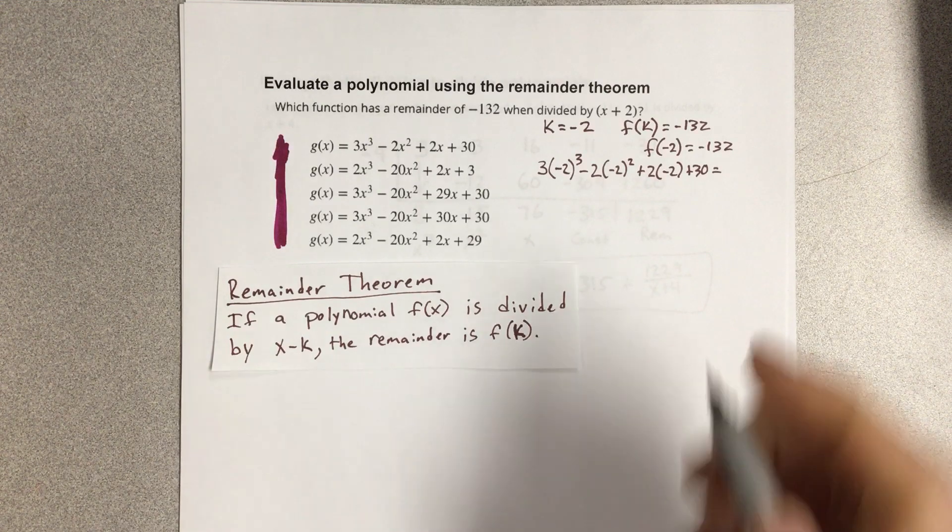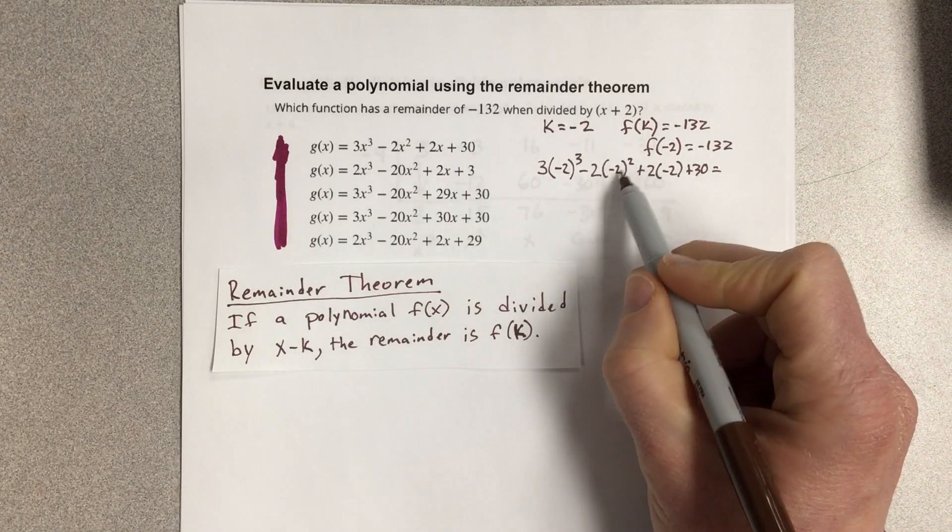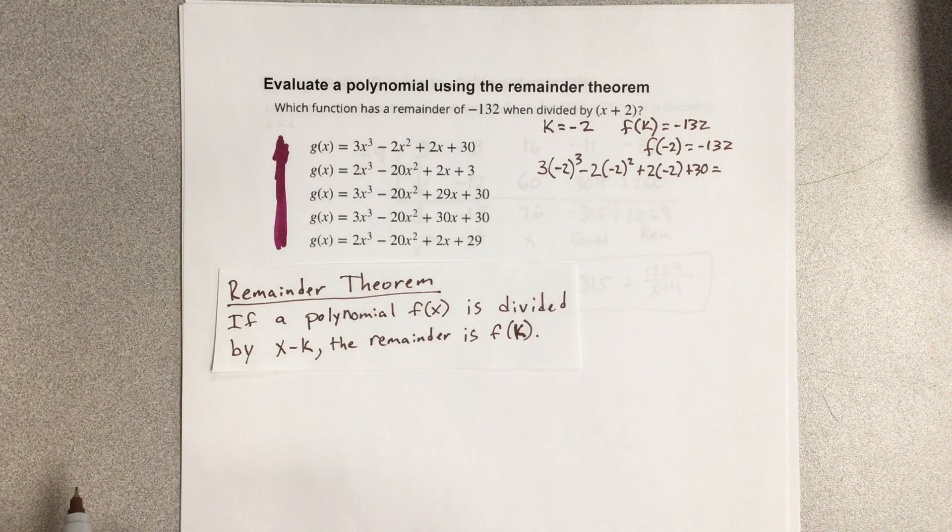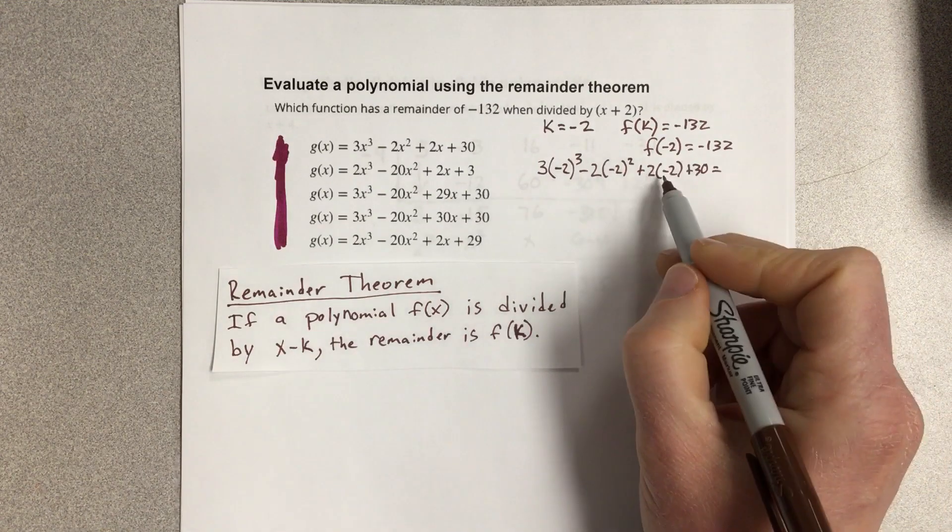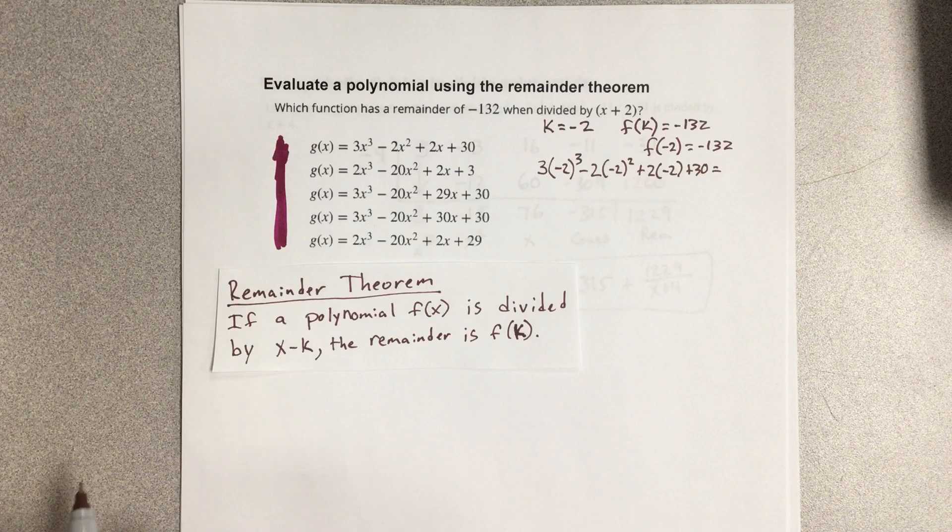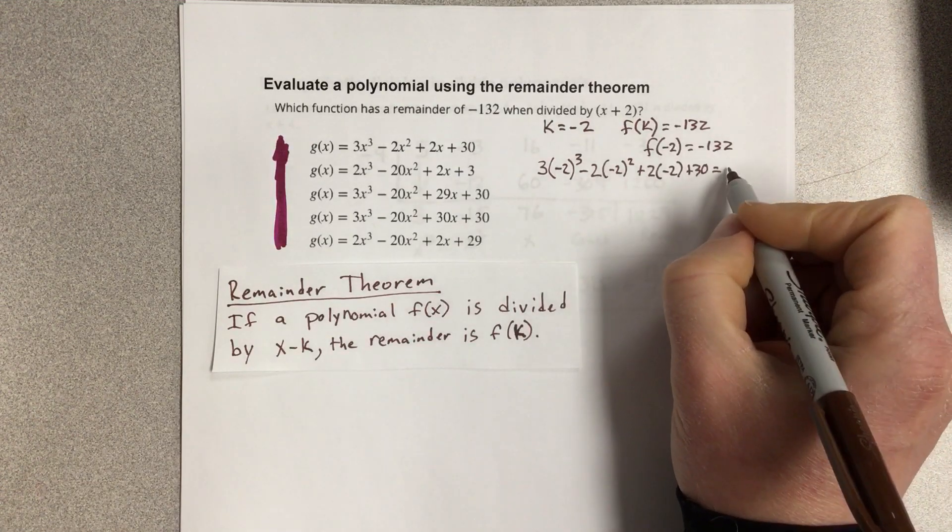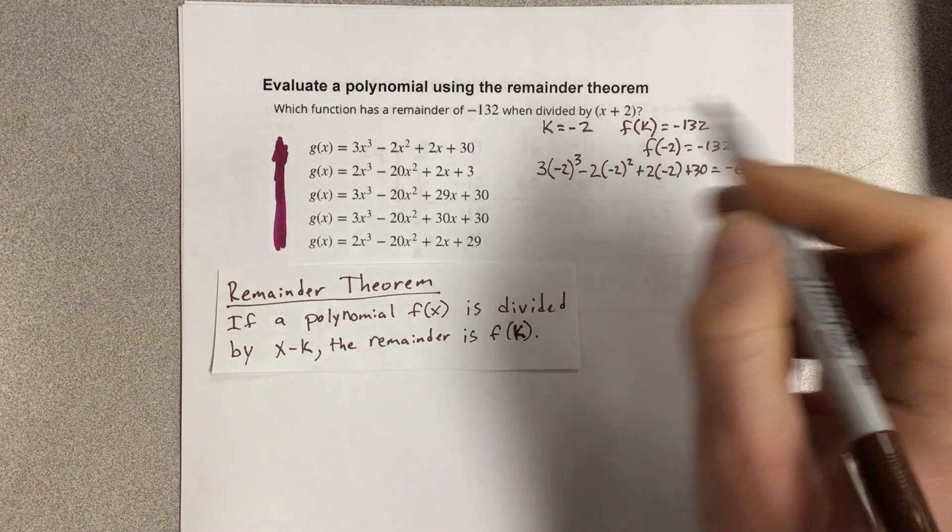So I've got negative 24 here. This would be negative 2 squared is 4, so minus 8 minus 4 more and then plus 30. So, I get negative 6, which is not negative 132, so this one is out.